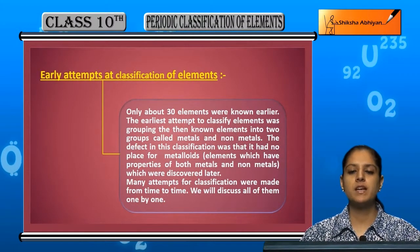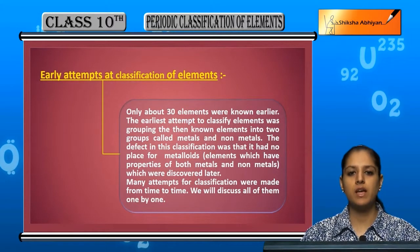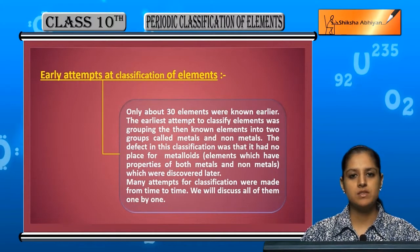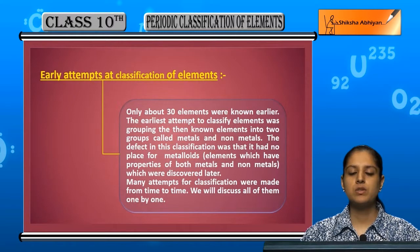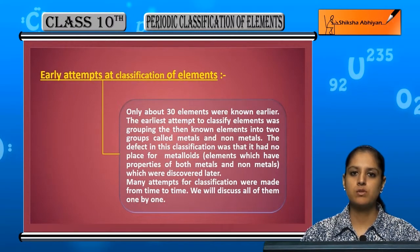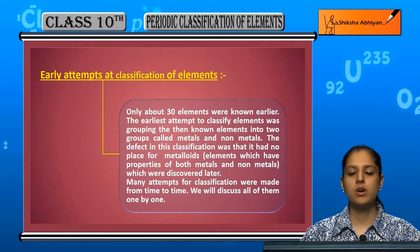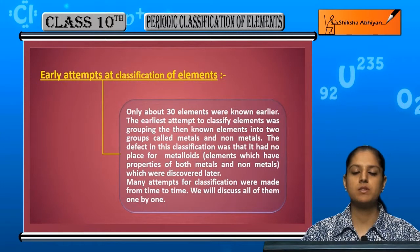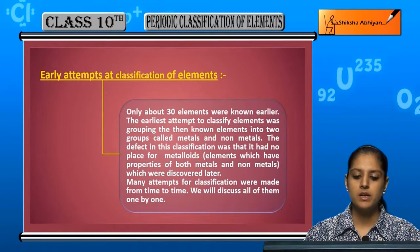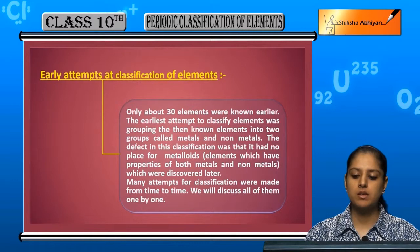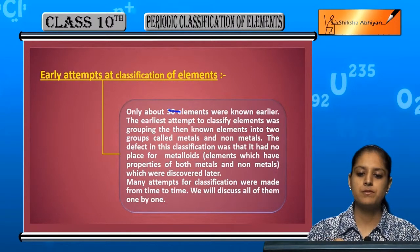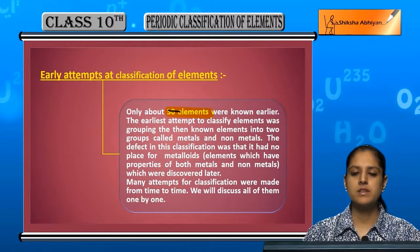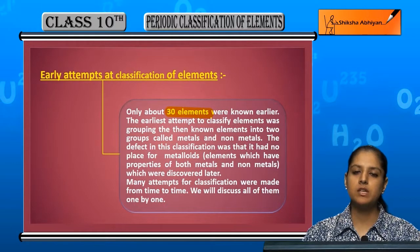The early and starting attempts involved many scientists who classified the elements in different ways. There were some loopholes or drawbacks in those attempts. At that time, only around 30 elements were known.